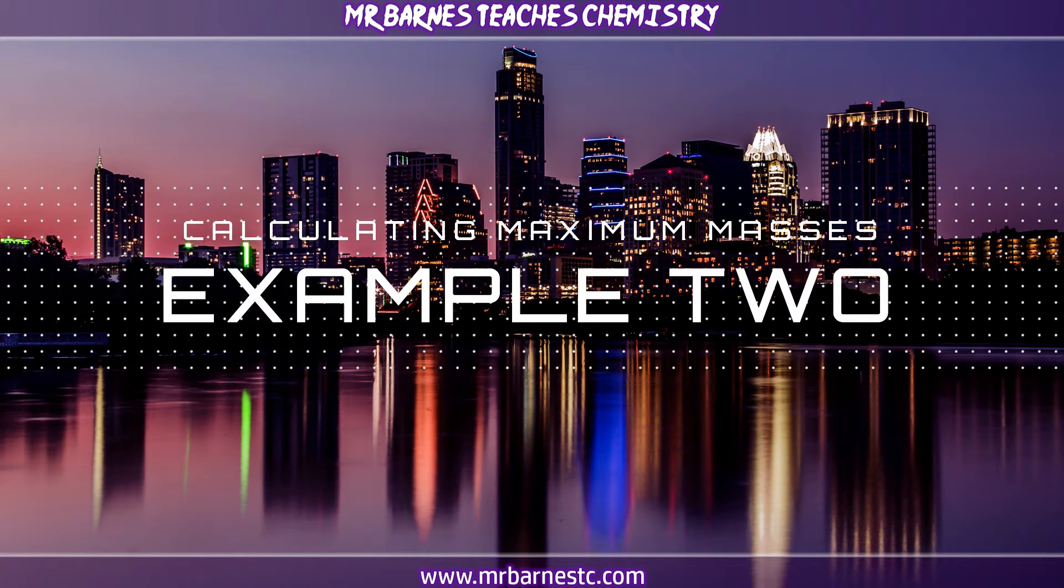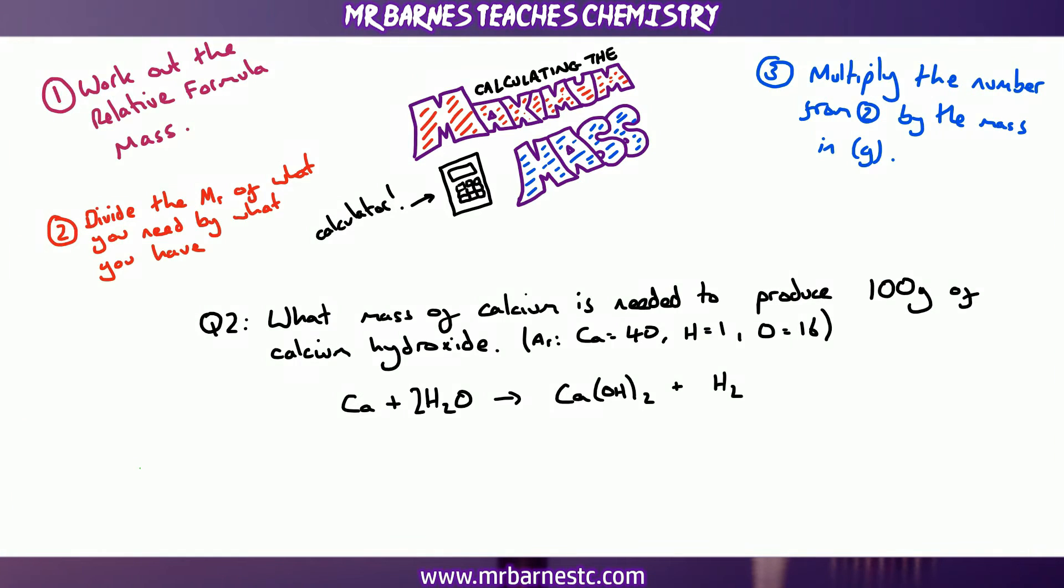If we have a look at a second example then. So question 2 here says, what mass of calcium is needed to produce 100 grams of calcium hydroxide? You've got the atomic masses, calcium 40, hydrogen 1, oxygen 16. And you've got your balanced equation. Ca plus 2H2O goes to Ca(OH)2 plus H2. So what you need to do is exactly the same as what we've just talked about. So step one, work out the relative formula mass.